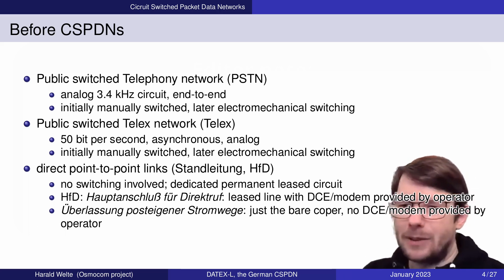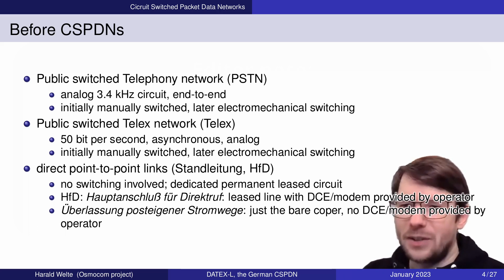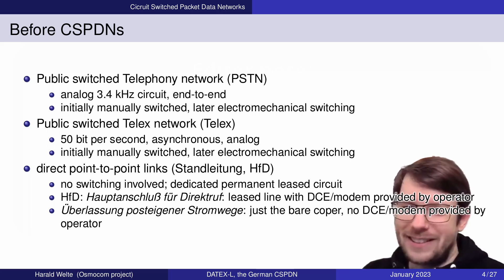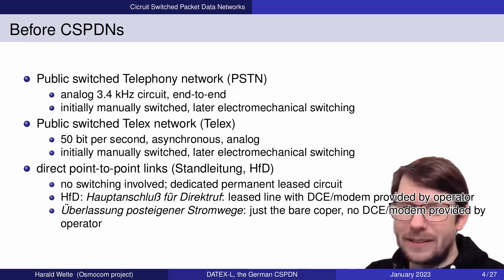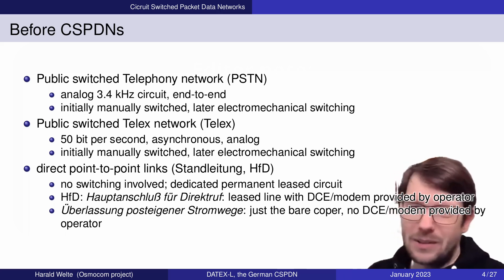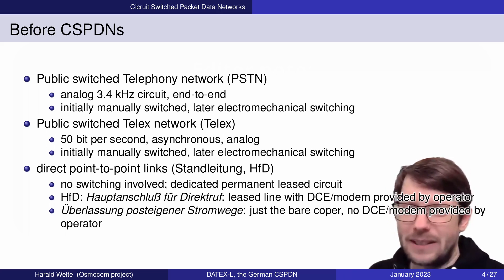The other option was called Überlassung Posteigener Stromwege — leasing of post-property circuits. In that case, you really only rented the bare copper wires and attached your own communication equipment to them.